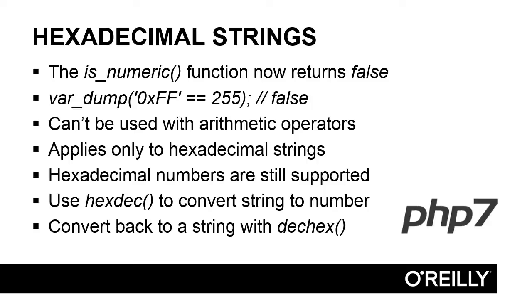This applies only to hexadecimal strings — in other words, hexadecimal values in quotes. It doesn't affect hexadecimal numbers that aren't wrapped in quotes. If you need to convert a hexadecimal string to a number, use the hex2dec function, and you can convert it back to a hexadecimal string later with dec2hex.